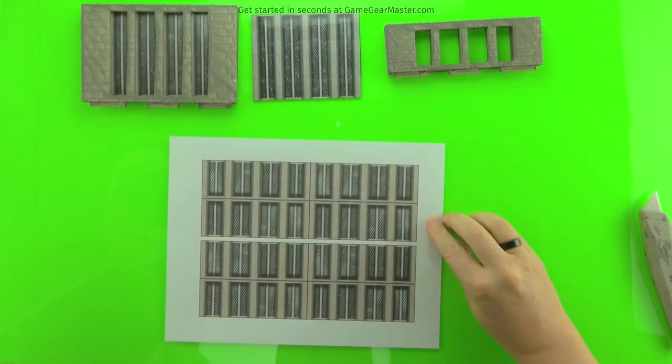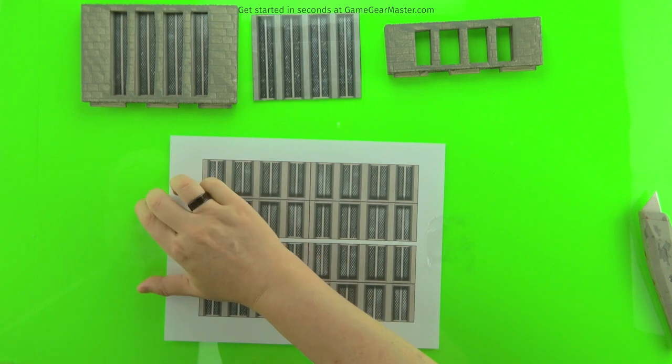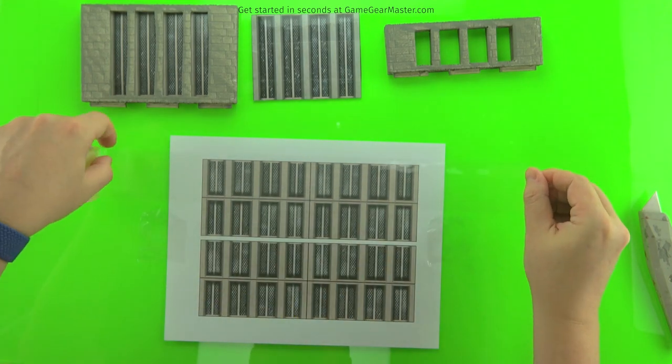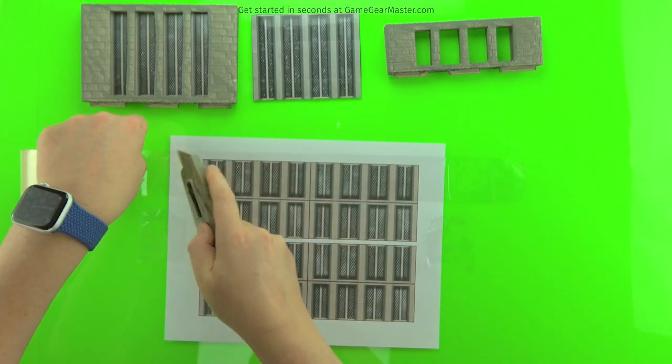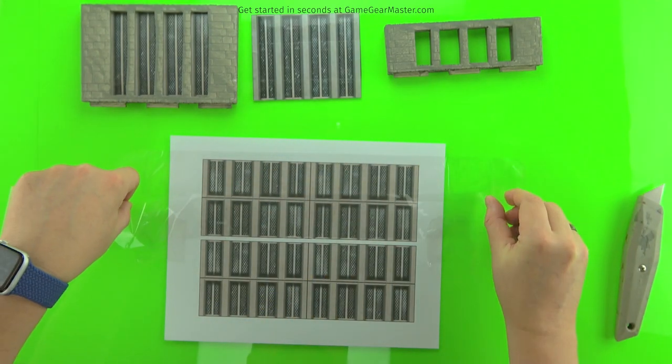And to do the single height windows is exactly the same. You probably guessed that. Tape down your printout to your work surface. Gently drape the packing tape over the printout, so you don't get bubbles. And do this all the way on the parts that are going to be your window.